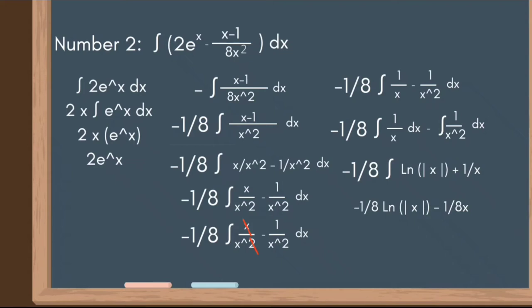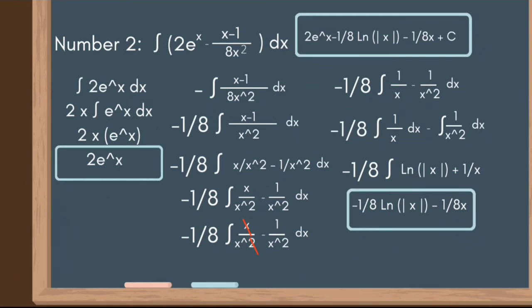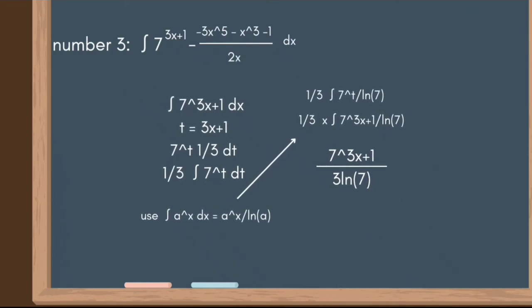We evaluate: the integral of 1/x dx equals ln|x|, and the integral of 1/x² dx equals 1/x. Distributing negative 1/8 to ln|x| + 1/x gives us negative 1/8 · ln|x| minus 1/(8x). Summing both parts and adding the constant, our final answer for number two is 2eˣ - (1/8)ln|x| - 1/(8x) + C.